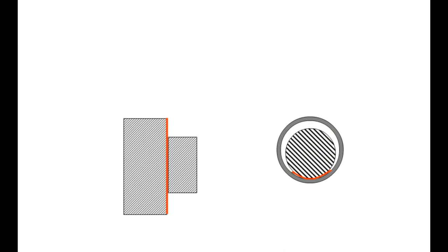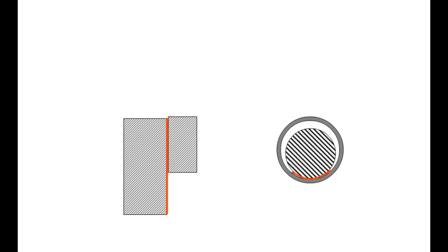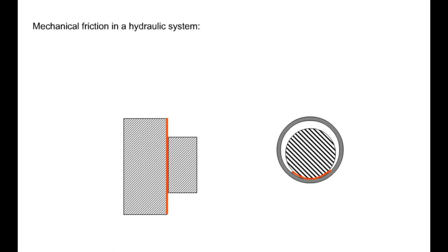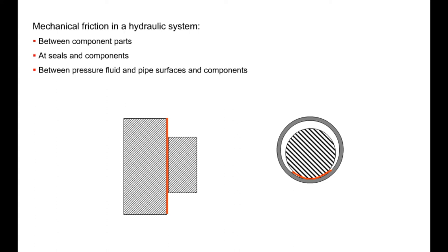Mechanical efficiency is reduced by frictional losses. In principle, friction occurs everywhere where two moving bodies come into contact. In a hydraulic system, there will be mechanical friction between individual parts of the components — that is, on bearings, at seals and components, and between pressure fluid and pipe surfaces and components.